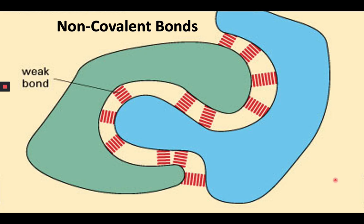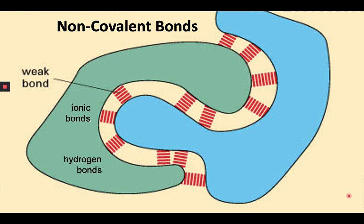In aqueous solutions, covalent bonds are 10 to 100 times stronger than other attractive forces between atoms, allowing their connections to define the boundaries of one molecule from another. But much of biology depends on the specific binding of different molecules to each other. This binding is mediated by a group of non-covalent attractions that are individually quite weak, but whose bond energies can sum to create an effective force between two separate molecules. We will now be meeting the four different non-covalent bonds: ionic bonds, hydrogen bonds, van der Waals attractions (also known as London forces), and hydrophobic interactions.